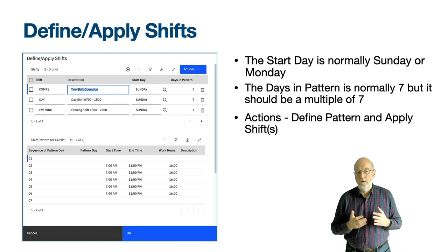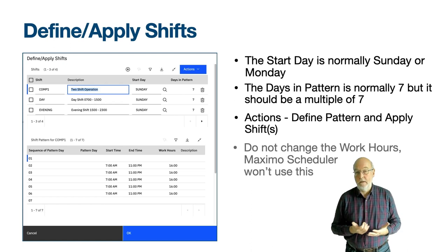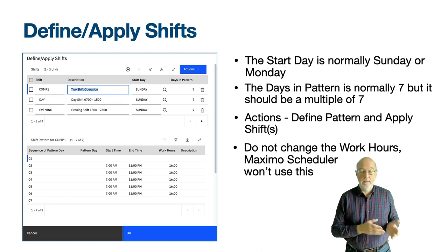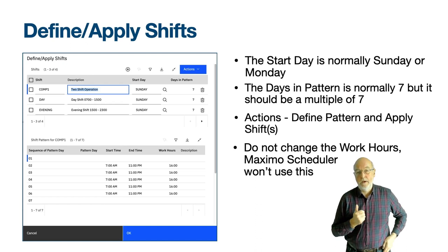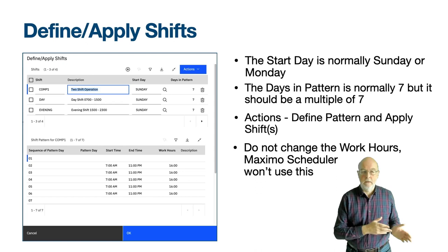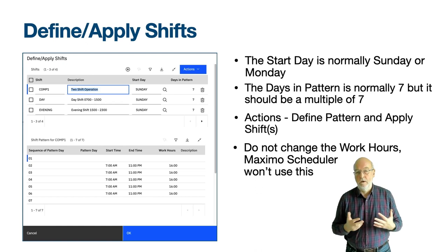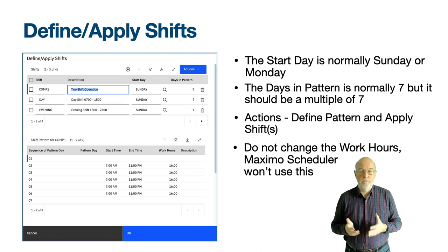You enter the start time and end time for each working day. The work hours are calculated, but do not change this as Maximo Scheduler won't use this number of hours — it currently uses the hours calculated between the start time and end time. The pattern day field is used if you have a calendar with multiple shifts. For example, if my three-shift rotation has days, evenings and night shifts, then use D, E and N respectively. It will be seen in the graphical resource view application of Maximo Scheduler to indicate what part of the 21-day shift a person is working. The button action 'fill out work days data' is like a duplicate action — it copies the current row data through to the last day in the pattern. If you have a start day of Monday, it will require you to remove the start time and end time of sequence 06 and 07 if your calendar is a 5-day workweek.